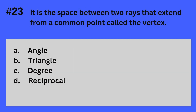Question 23. It is the space between two rays that extend from a common point called the vertex. A. Angle. B. Triangle. C. Degree. D. Reciprocal. The answer? It's A. Angle. It is the space between two rays that extend from a common point called the vertex — Angle.